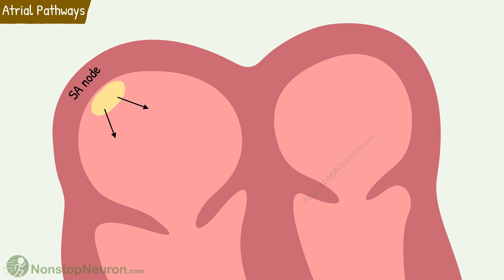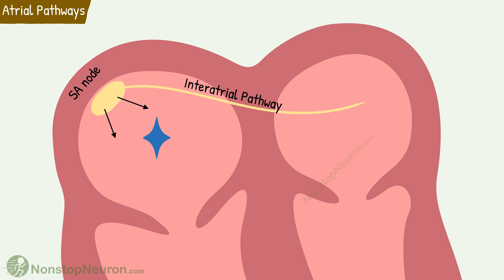The ends of the sinus nodal fibers are connected directly to the surrounding atrial muscle fibers. Therefore, the action potential originated in the sinus node spreads directly into these atrial muscle fibers. The interatrial pathway passes through the anterior walls of the atria and takes the impulse to the left atrium. So this is how the impulse spreads to the atria.